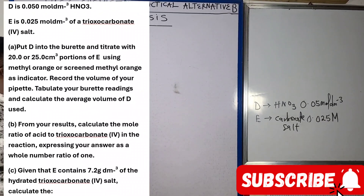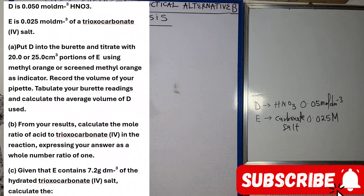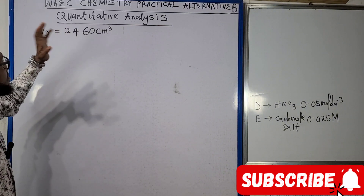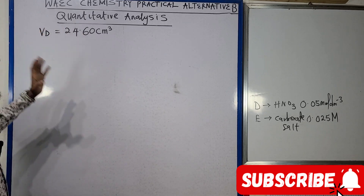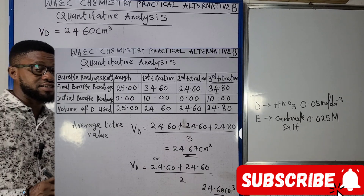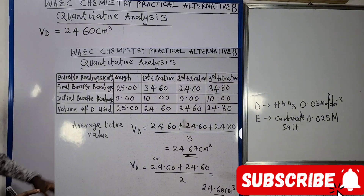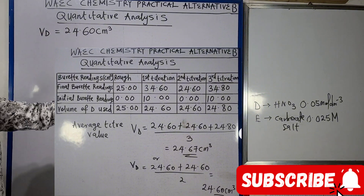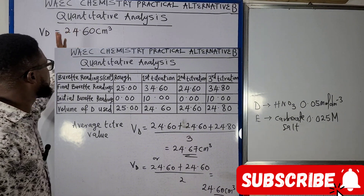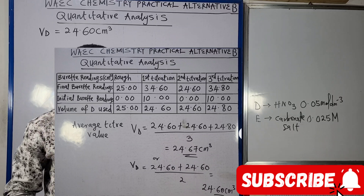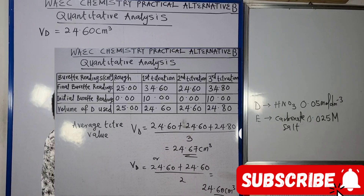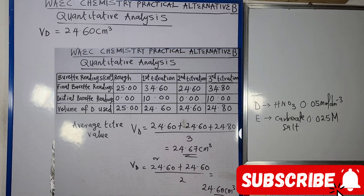As I mentioned in the very first lecture video on quantitative analysis, and as you can see on your screen, our table shows that the average volume of D (the trioxonitrate(v) salt) used is 24.60 cm³. So we've answered that part of the question.